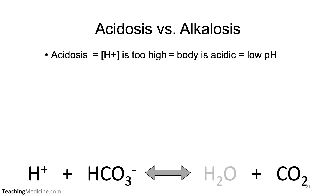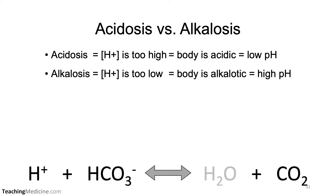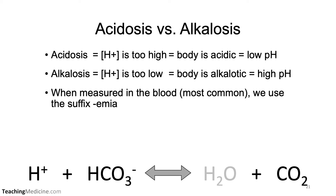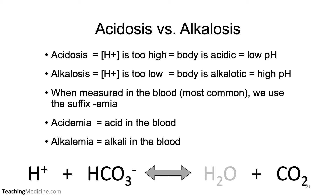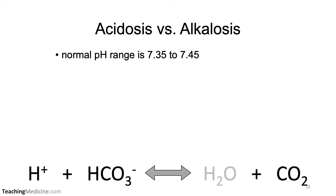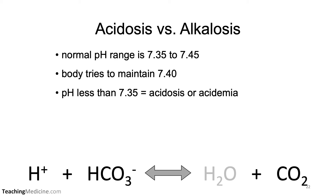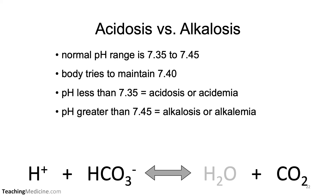A process of acidosis is when the hydrogen ion concentration is too high, meaning the body is acidic and the pH would be low. Alkalosis is when the hydrogen ion concentration is too low, the body is alkalotic, and the pH is high. When measured in the blood — which is the most common way we measure acid-base disturbances — we use the suffix '-emia.' Acidemia means acid in the blood; alkalemia means alkali in the blood. The normal human pH range is 7.35 to 7.45, and the body tries very hard to maintain a pH of 7.40. A pH less than 7.35 is called acidosis, and a pH greater than 7.45 is considered alkalosis, referred to as acidemia or alkalemia.